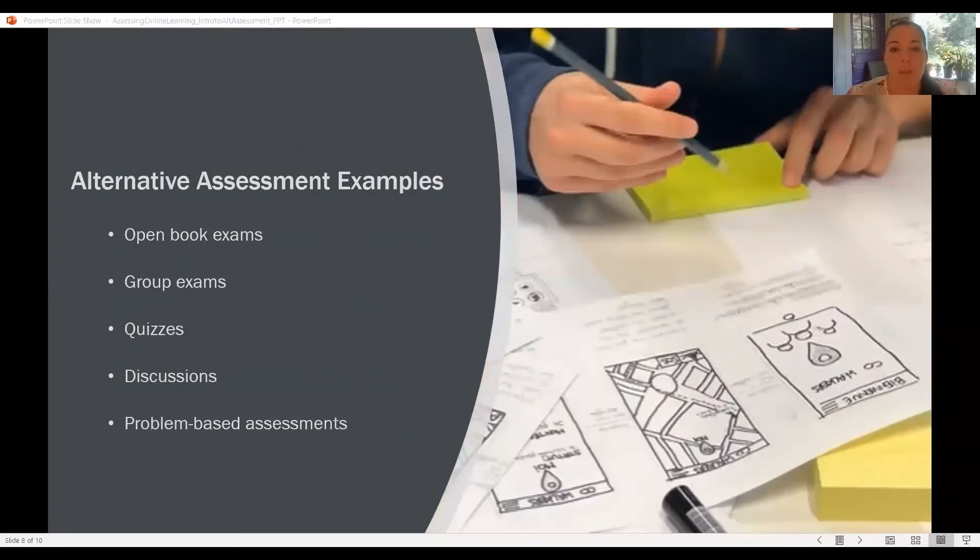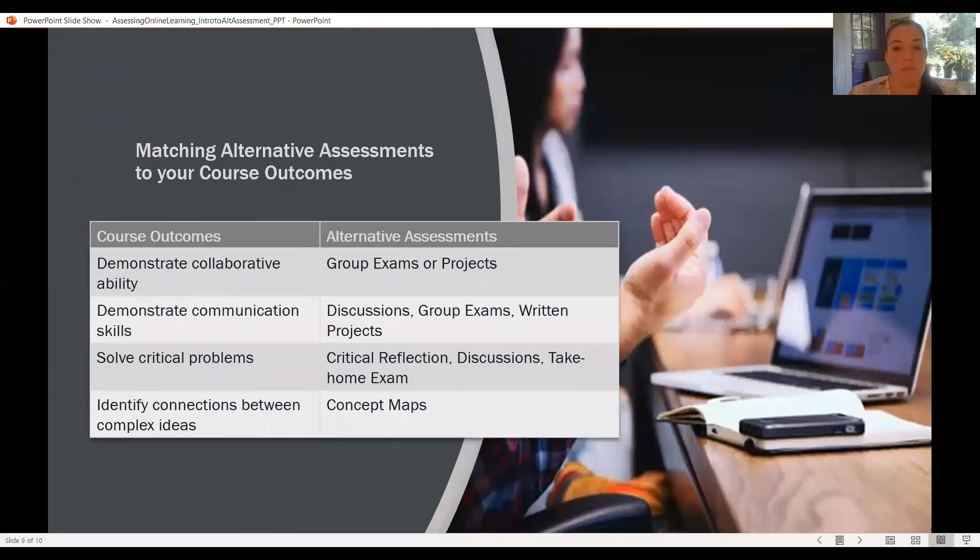What are examples of alternative assessments? Alternative assessments can be things like group exams, discussion boards, take-home exams, or problem-based assessments. As with any assessment, the method that you choose should align with your course outcomes. So here's an example of some course outcomes with typical alternative assessments that you might want to explore.